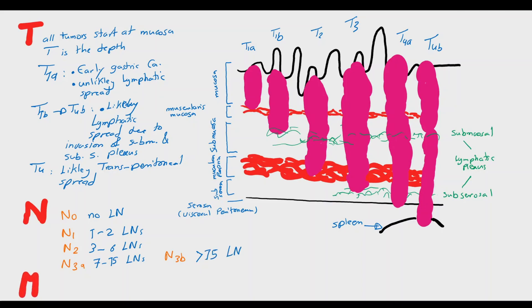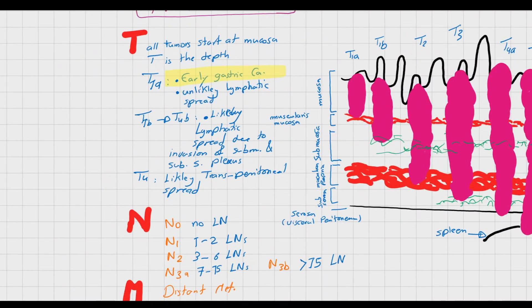M is distant metastasis. M1 is presence of metastasis and M0 is absence of metastasis.